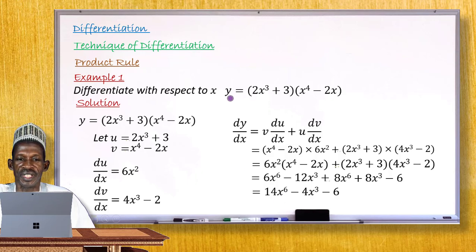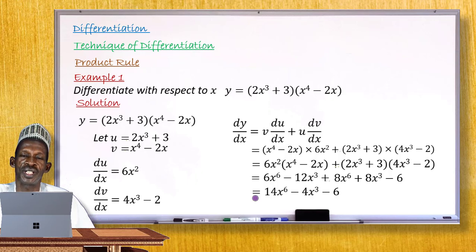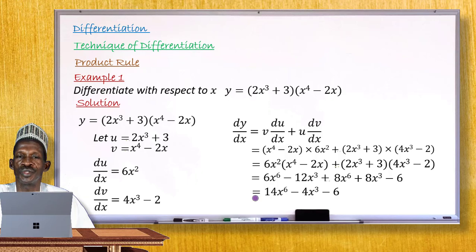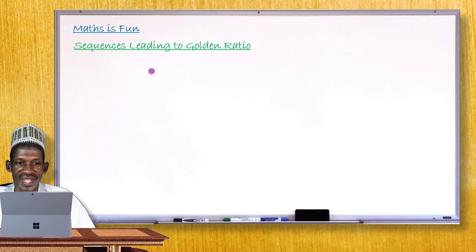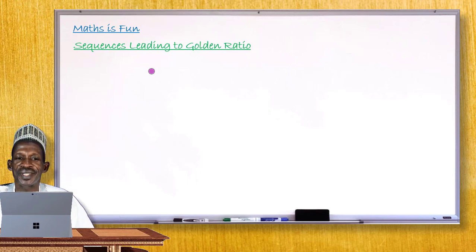With these few examples, I hope you will be able to find the derivative of a function that can be expressed as a product of two other functions, using the technique we call the product rule. Thank you for your attention. Now let me move to the last segment, where I will explain what the generalized sequences are that lead to the golden ratio.